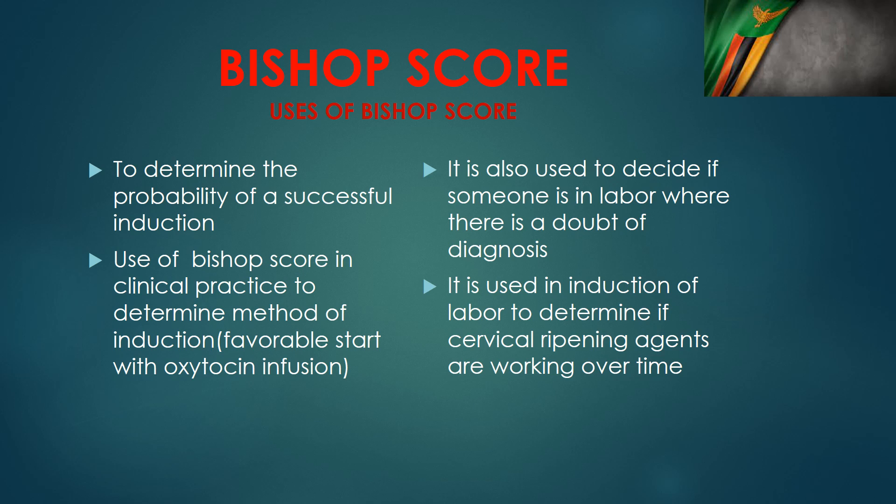In clinical practice, we use the Bishop Score to determine the method of induction. If the Bishop Score is good, we normally would start the induction with oxytocin from the start. If the Bishop Score is poor, we normally start by ripening the cervix — we can use misoprostol, dinoprostone, or a balloon catheter to cause cervical ripening. Another use is that sometimes you're doubting if the diagnosis of labor is there, so if you do a proper Bishop Score, you might be able to reach that diagnosis, since effacement, dilatation, and these parameters are all part of the labor diagnosis.